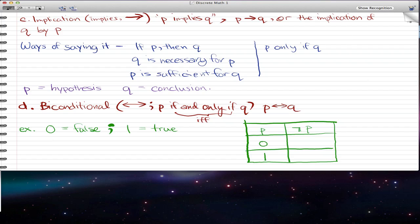Moving on, we have implications. This is symbolized by an arrow, and this arrow pretty much means implies. So if we have P implies Q, that's pretty much P arrow Q, or the implication of Q by P. There are different ways of saying it, such as if P then Q, Q is necessary for P, P is sufficient for Q, and P only if Q. Now P in this whole statement is the hypothesis, and Q is the conclusion. An example of this using our Combinatorics and Harry Potter example, we could say that if Combinatorics is a required course for a sophomore, then JK Rowling wrote the Harry Potter series.